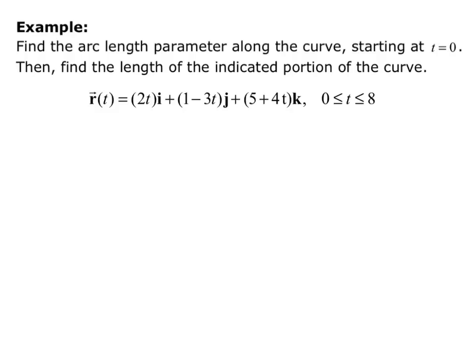In this example, we want to find the arc length parameter along the curve starting at t equals zero, and then find the length of the indicated portion of the curve. Our curve is r(t) = 2t·i + (1 − 3t)·j + (5 + 4t)·k, and t ranges from 0 to 8.